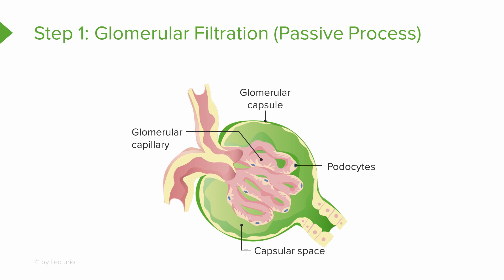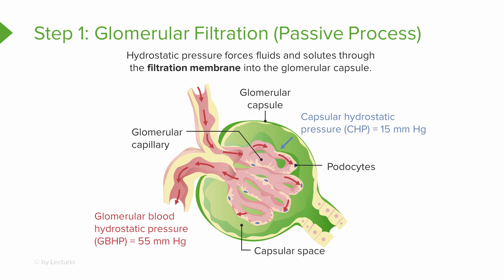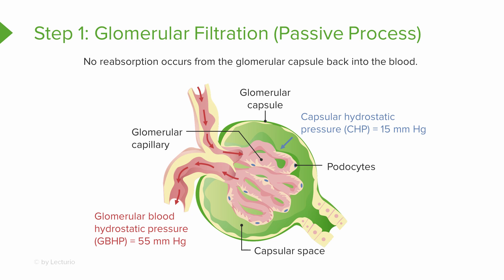Because this is a passive process, no metabolic energy is expended during filtration. Instead, hydrostatic pressure forces fluids and solutes through a filtration membrane into the glomerular capsule. Hydrostatic pressure is the pushing pressure of a fluid against the walls of a capillary due to gravity, and that causes fluid to move out of the capillaries into the capsular space. There is no reabsorption of any materials from the glomerular capsular space back into the blood.